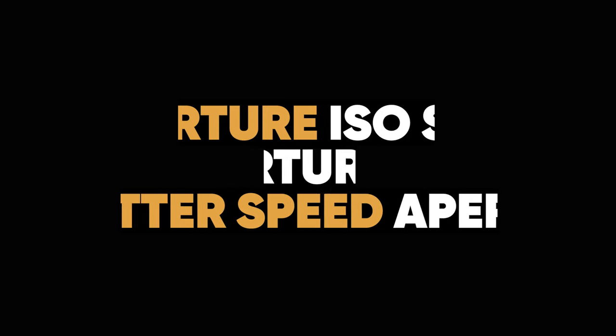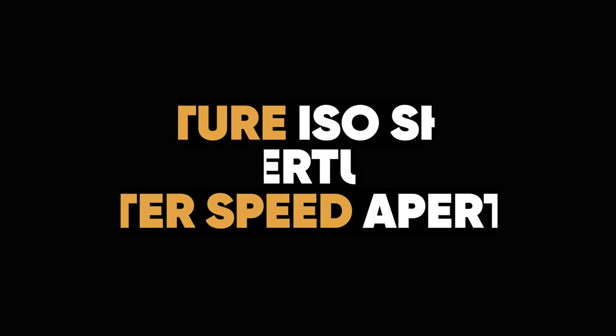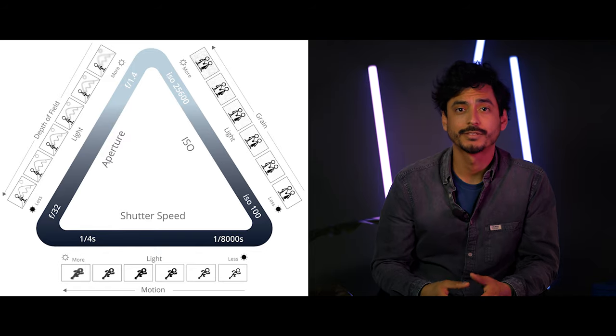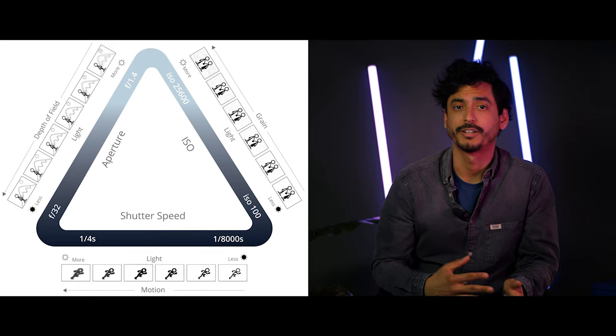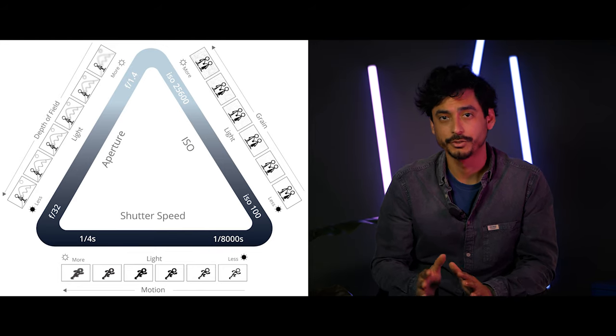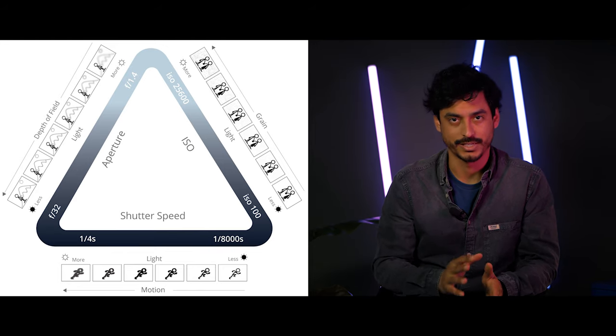In manual mode, you're handling all three of them, which you can do if you have the time and knowledge. On semi-automatic mode, you set one or two of these values and the camera handles the rest. This is good when you don't have that much time and you already know the result you're after. The main point is that you know what you're giving up if you're increasing or reducing each of these settings.